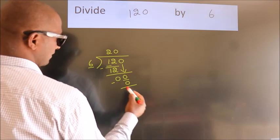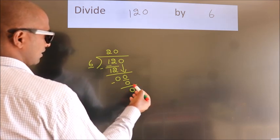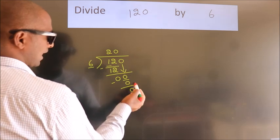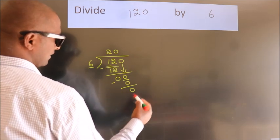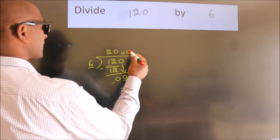Now we subtract, we get 0. After this, no more numbers to bring down and we got remainder 0. So this is our quotient.